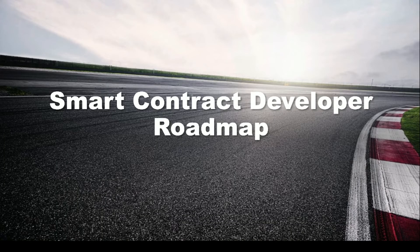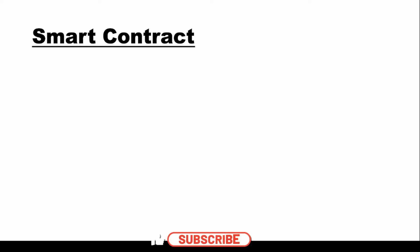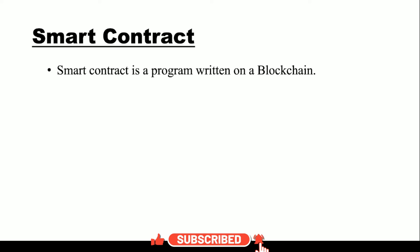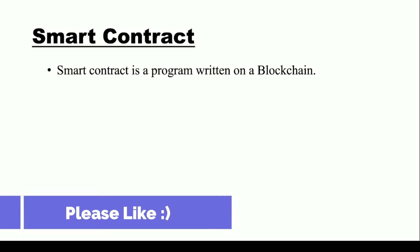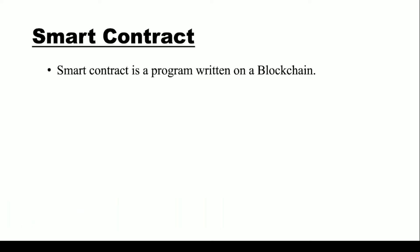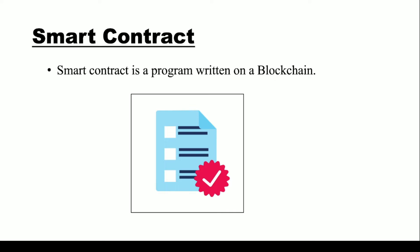In this video we are going to see how we can become a successful smart contract developer. Before talking about smart contract development, we first have to understand what a smart contract is. A smart contract is simply a program written on a blockchain. Just like you create programs in C, C++, Java, or Python, a smart contract is also a program — the only difference is that you write it on a blockchain. Do not be confused by the term; it is simply a programming language used for blockchain.